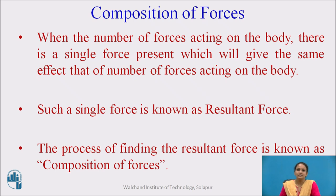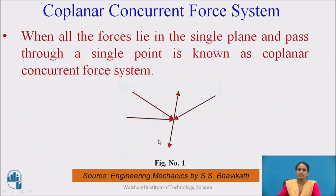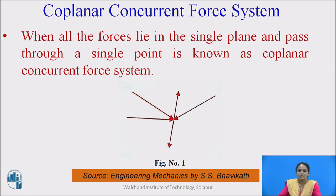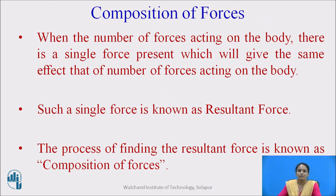Composition of Forces: when a number of forces are acting on a body, there is a single force which will give the same effect as that of the number of forces acting on the body. Such a single force is known as resultant force. These forces are passing through the same point — they are concurrent forces in different directions. One force acting on the body can replace all those forces and give the same effect. The process of finding the resultant force is called composition of forces.